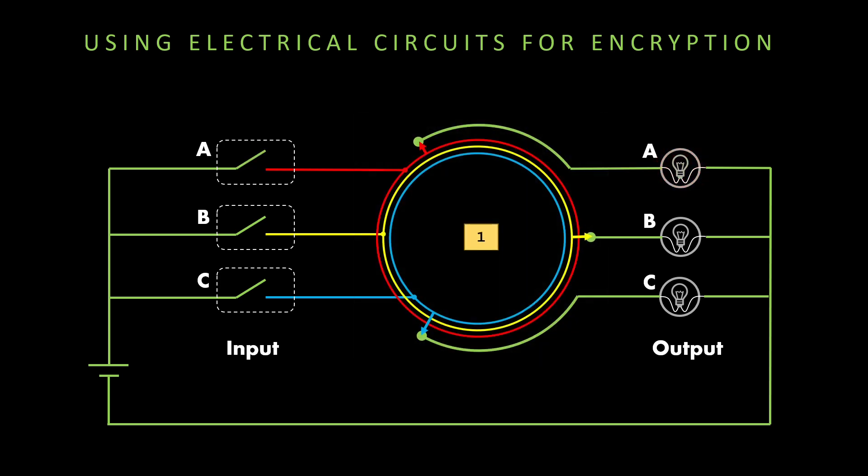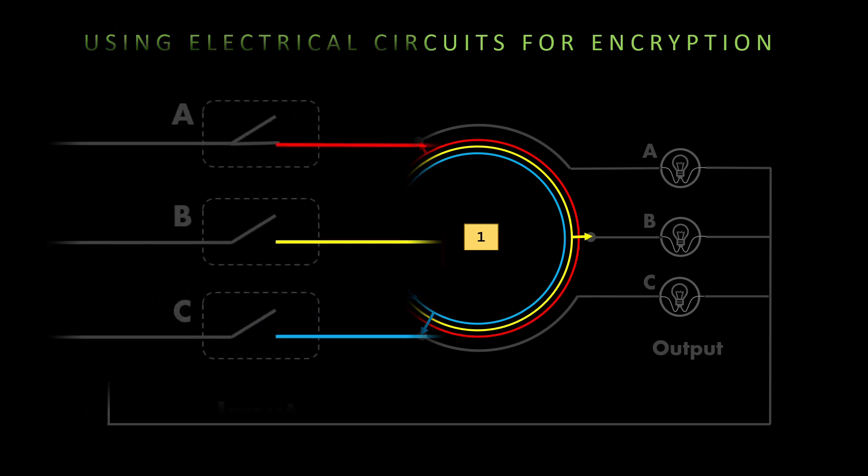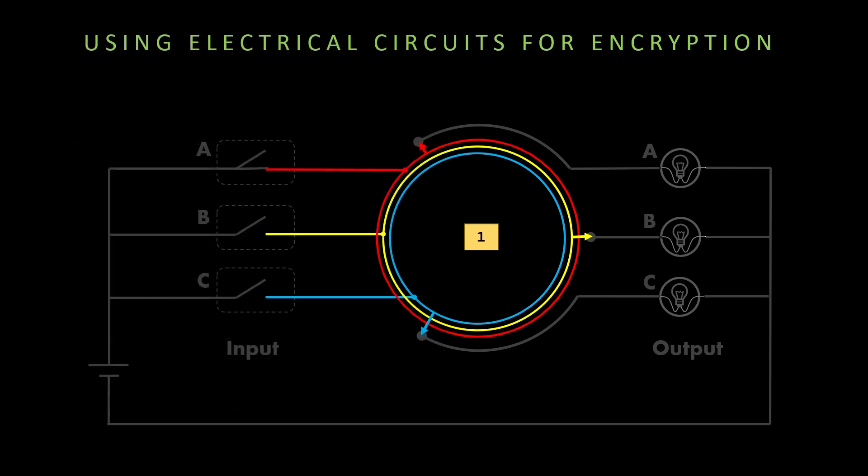This may look intimidating, but it's really simple and beautiful. There are three rings - red, yellow, and blue. Each of them connect to the input switches A, B, and C respectively. These rings rotate and their position depends on the number shown in the center. Each of these rings have a pointer, an arrow if you will, that connects to the output fixed contacts of A, B, and C light bulbs.